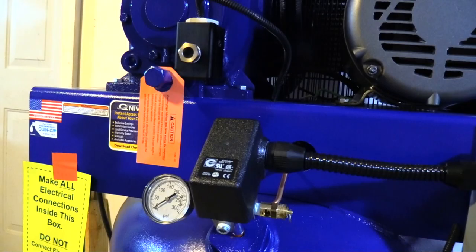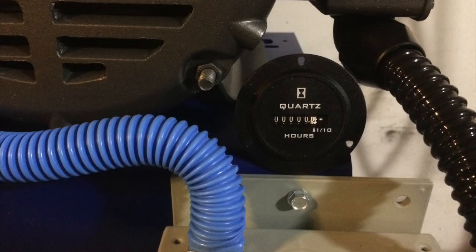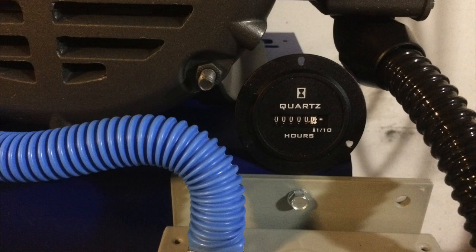The break in period for the Quincy air compressor is 50 hours. At the 50 hour interval, the oil must be changed. Each subsequent 200 hour period also requires an oil change to meet the Quincy warranty requirements. To keep track of the hours, I bought a TruMeter hour meter to install on the air compressor.